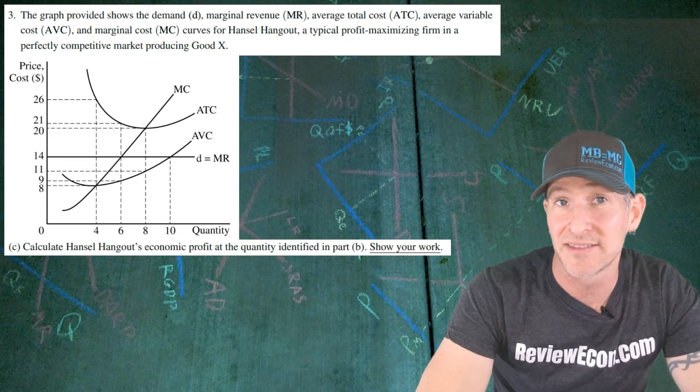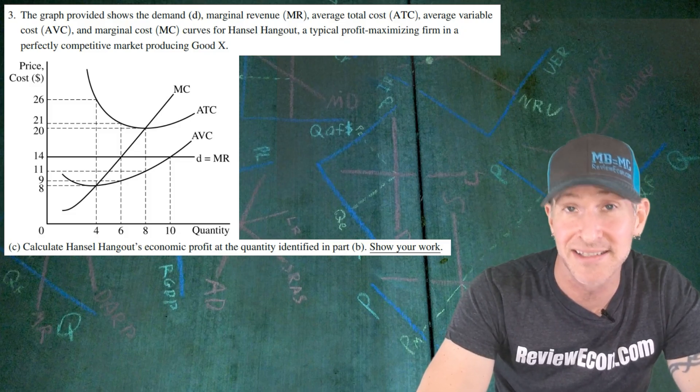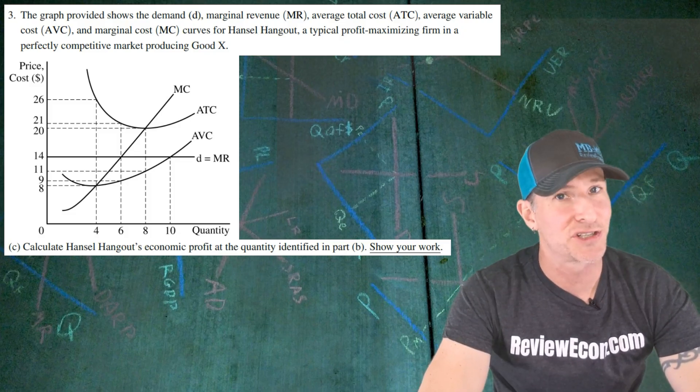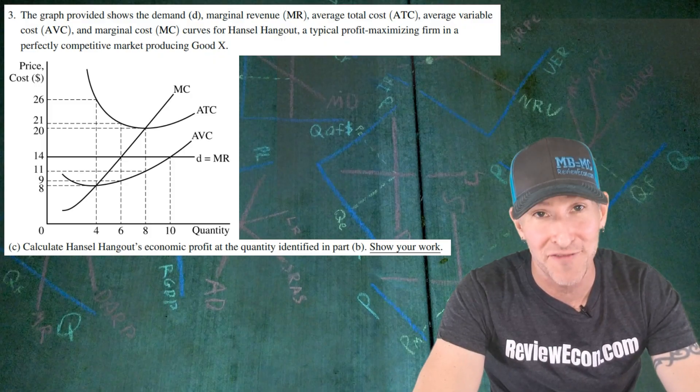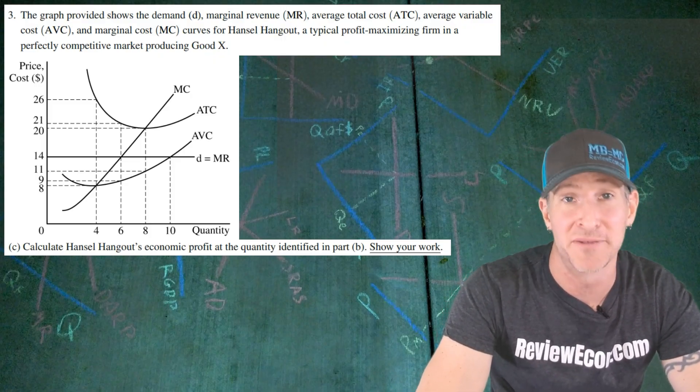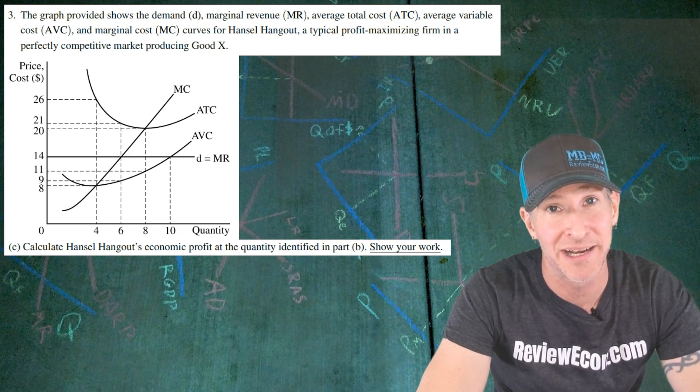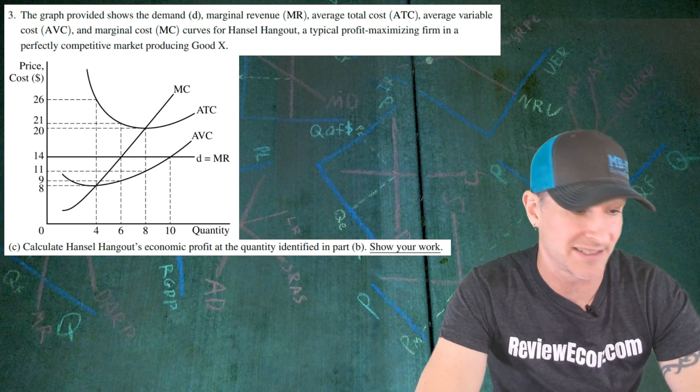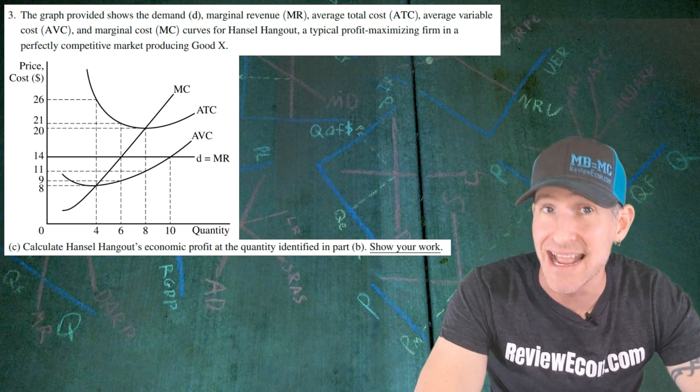For part C, we have to calculate the profit that Hansel Hangout gets and show our work. Now, this question is a little bit tricky here because the profit is actually negative because that average total cost curve is well above the demand curve. So this firm is not making any profit. They're suffering economic losses. But we can still calculate a negative profit here.